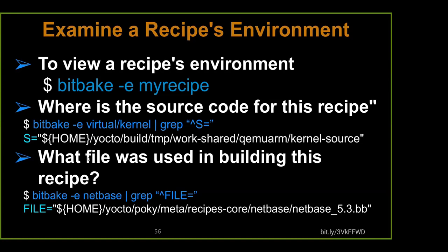At that point we apply those patches, do the configuration, and continue to build. What file was used for building this recipe? We're going to use NetBase — specifically the NetBase 5.3 .bb file. The 5.3 is important because that becomes our PV, our version of the package. BitBake is going to use that, unless you override it, as the version of that particular recipe.